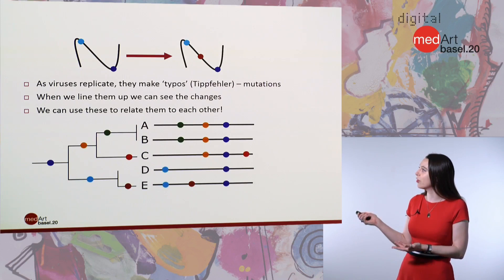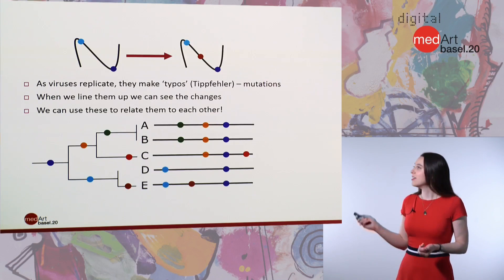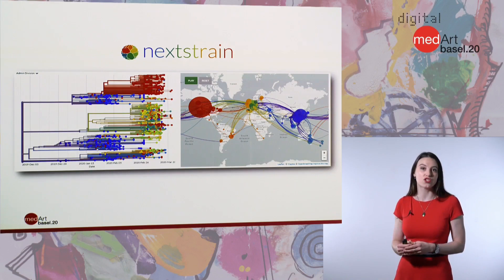We essentially make a virus family tree. If we then know where and when the virus was sampled, we're able to infer some things about what might have happened in the past. This is essentially the technique that we use to create the maps and the trees that you see on nextstrain.org. And we've been very fortunate to be able to do this with SARS-CoV-2.